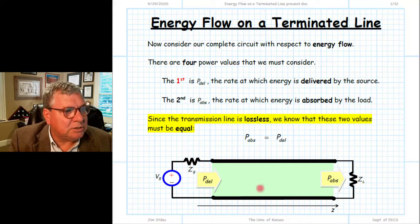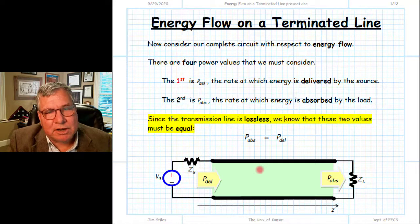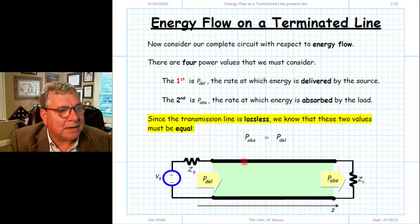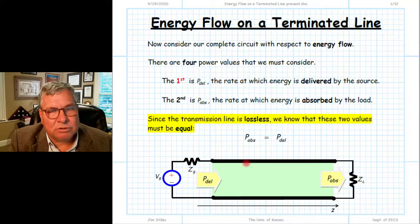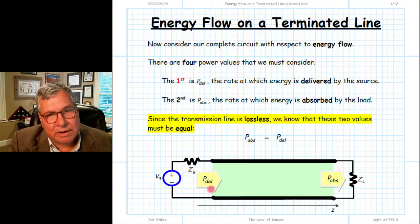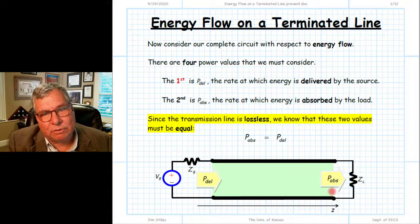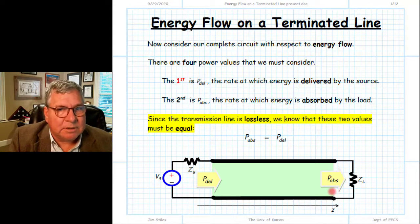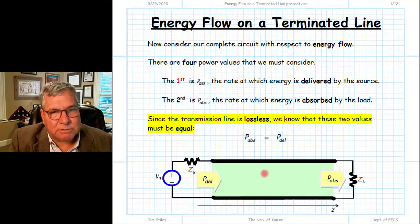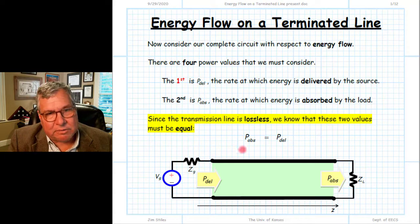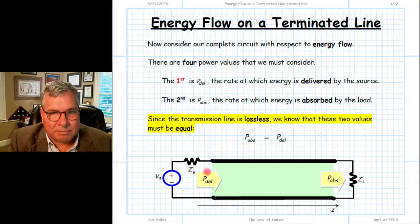This two-port device — our transmission line — inserted between source and load is a lossless two-port device. Because it's lossless, it cannot alter the rate of energy flow. The rate at which energy is flowing into the two-port device must be equal to the rate at which energy is flowing out. Therefore, because our transmission line is lossless, we conclude by conservation of energy that the power absorbed by the load will be equal to the power delivered by the source.